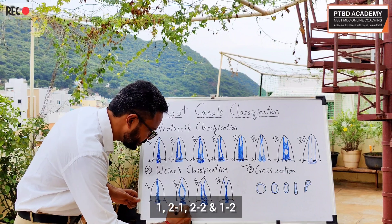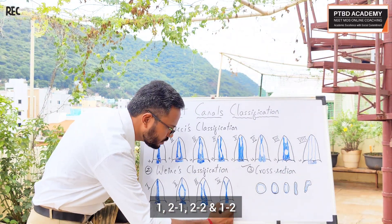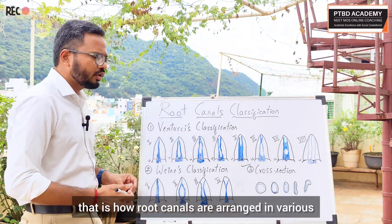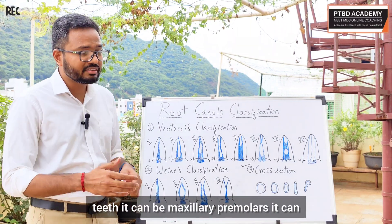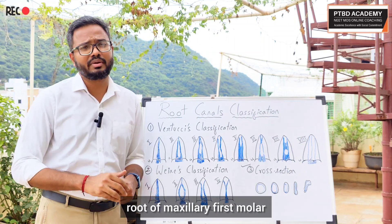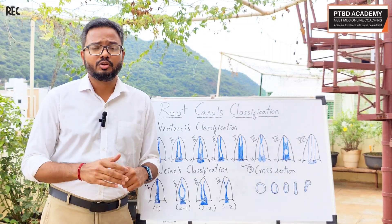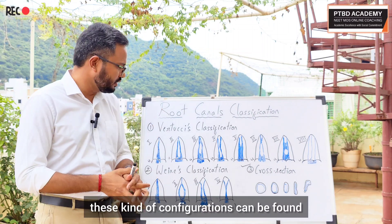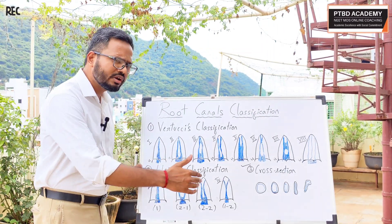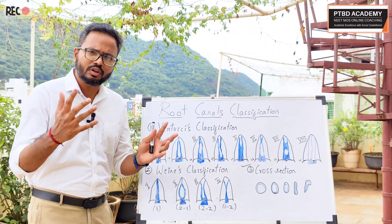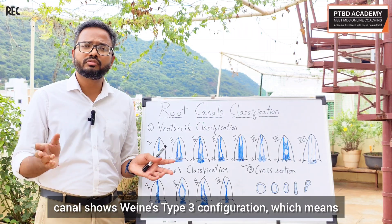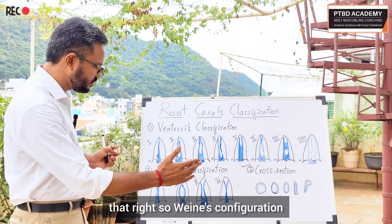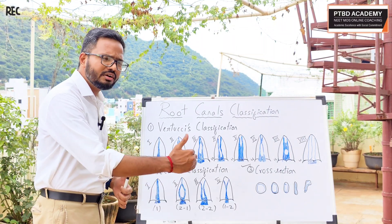So let's make note of the Weine configurations: type 1 is 1, type 2 is 2-1, type 3 is 2-2, and type 4 is 1-2. These configurations describe how root canals are arranged in various teeth — maxillary premolars, mandibular premolars, mesial buccal root of maxillary first molar, or mesial root of mandibular first molar. Weine classification is relatively easy to remember. If a question says the root canal shows Weine type 3 configuration, you should know it means 2-2.